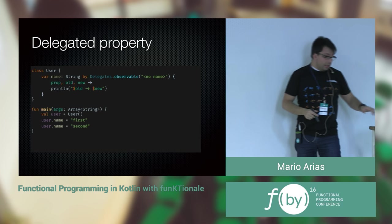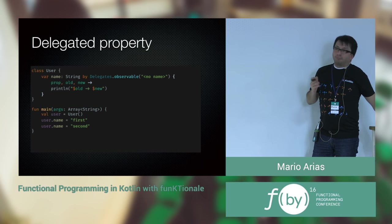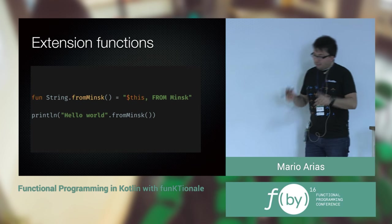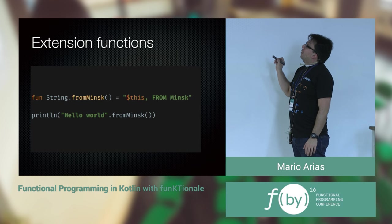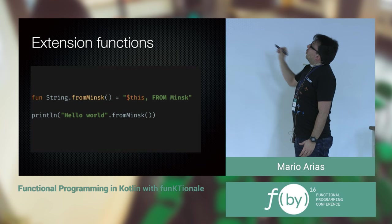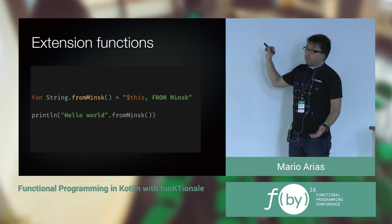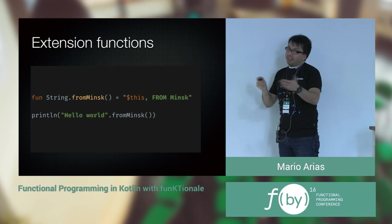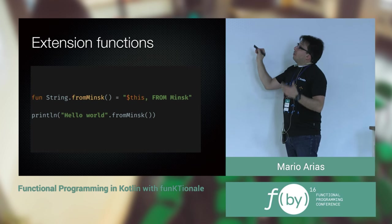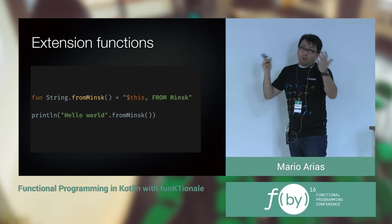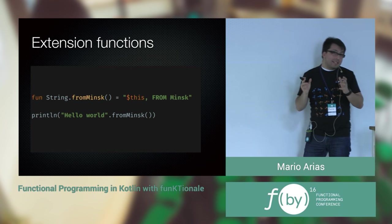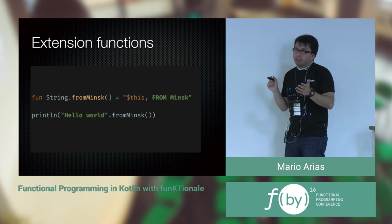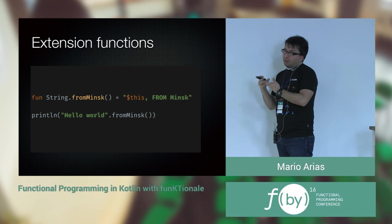Now, extension functions — you can add functions to your existing types. In this case, we are adding the function `frontMinsk` to String. So `String.frontMinsk` is a new function, and I can call `helloWorld.frontMinsk()`. This is evaluated at compile time, so if the extension doesn't exist, compilation fails — it's type-safe. This looks like Groovy meta-classes, but the advantage here is that it's at compile time, so it's safe to use.